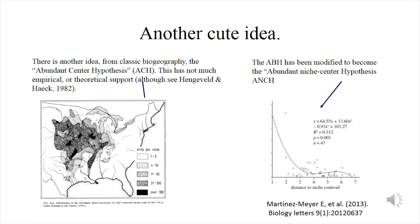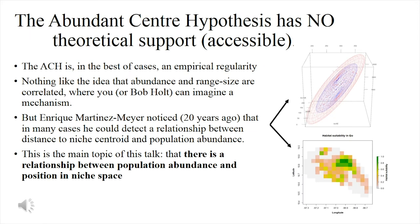There is another variation of that idea: the Abundance Niche Center Hypothesis, proposed by Martinez-Meyer et al. in 2013. It says that what matters is not the distance to the centroid of the distribution in geographic space, but the distance to the centroid in niche space. The geographic abundance center hypothesis has no accessible theoretical support — there is a paper published in a very obscure Dutch journal that I have not been able to get. So it's basically an empirical regularity in the cases for which it is true, and there has been a lot of criticism showing that it fails in many other cases.